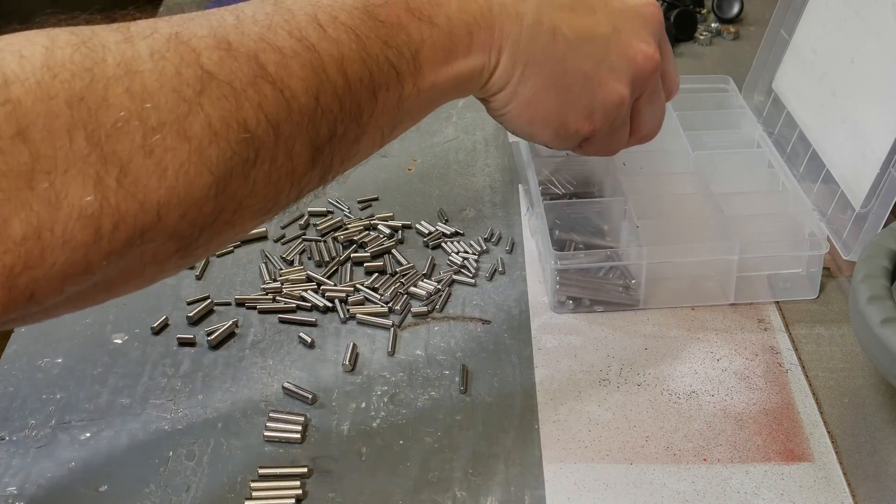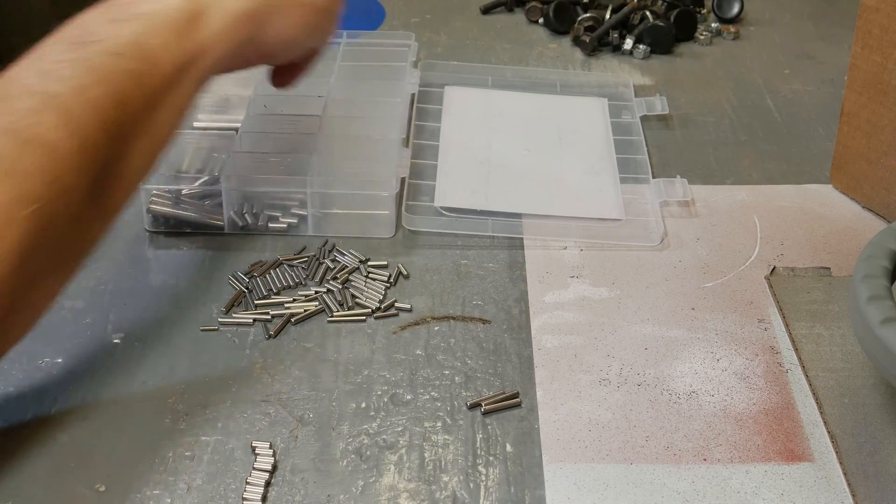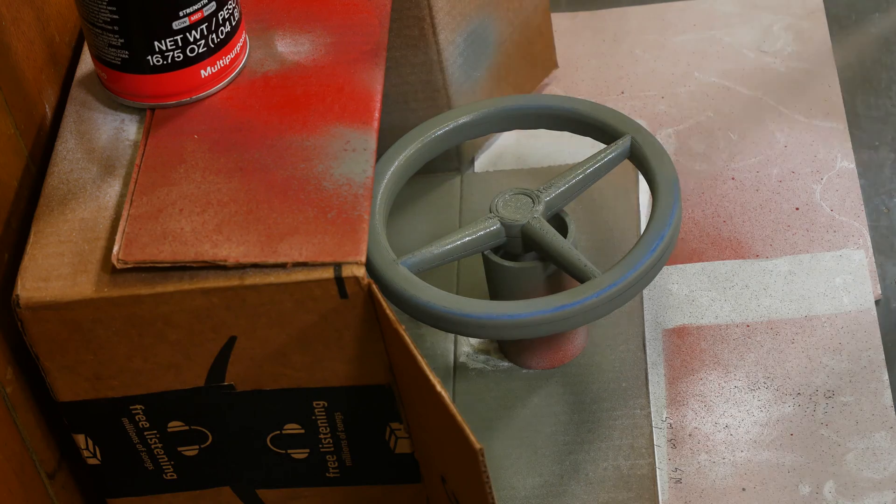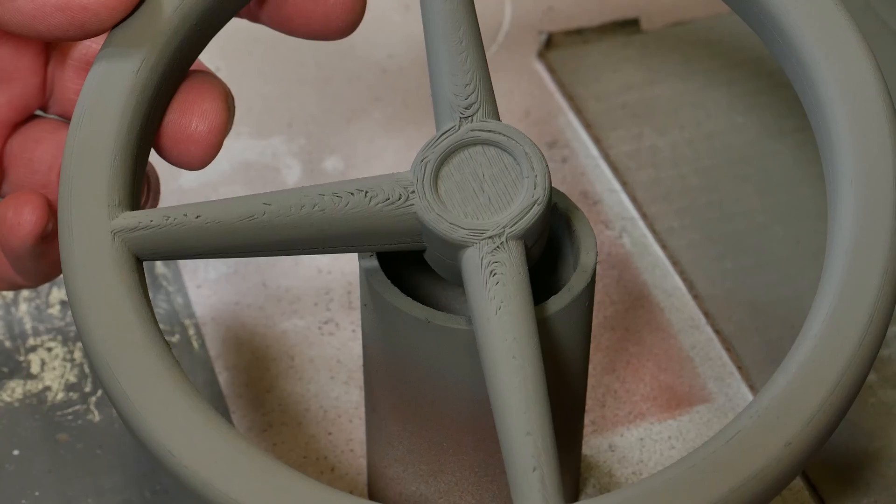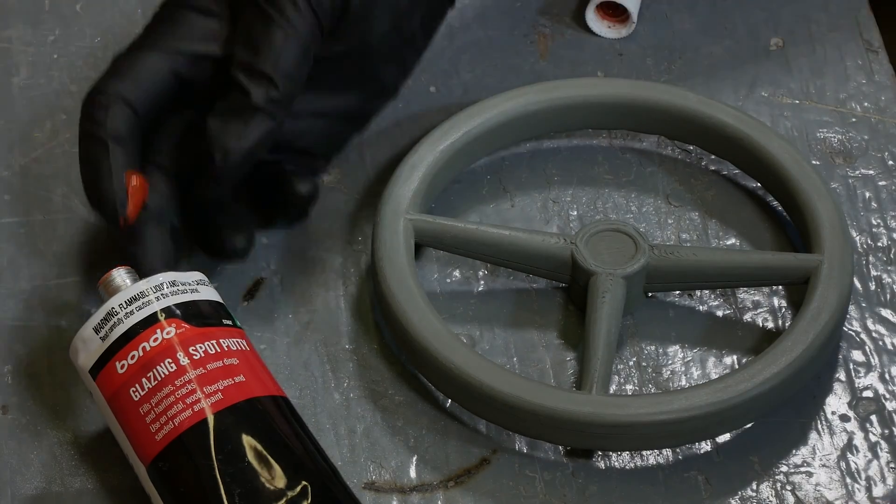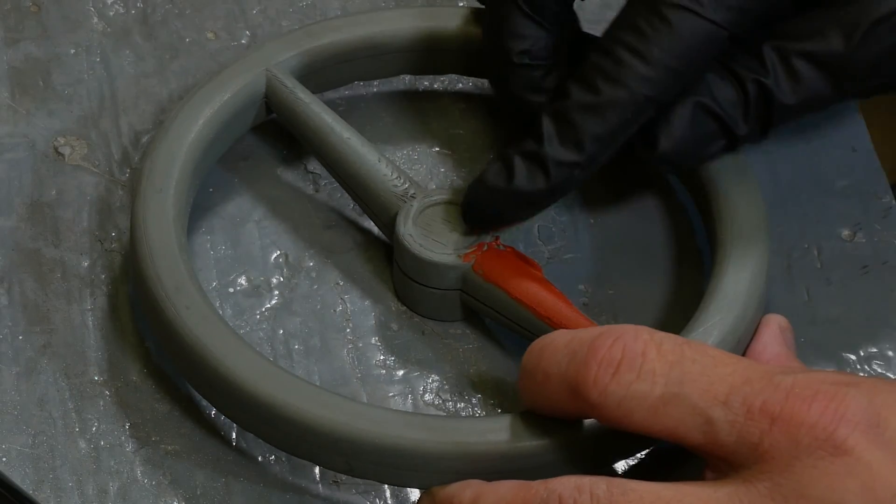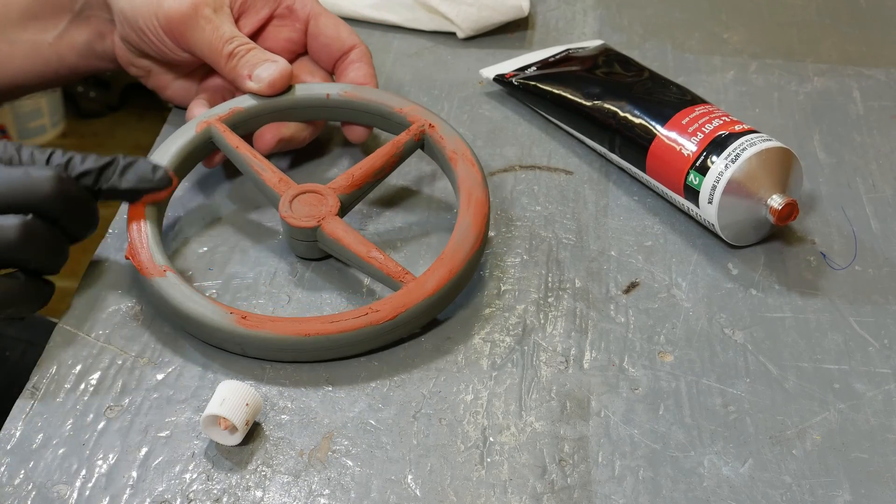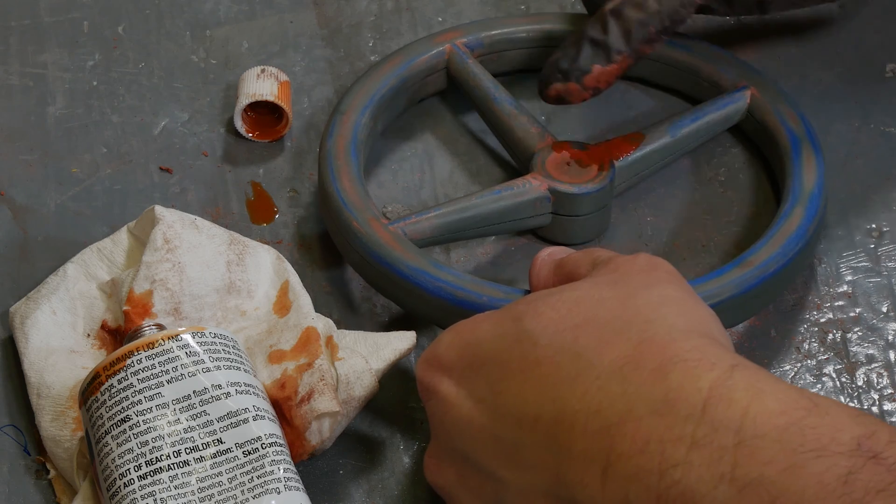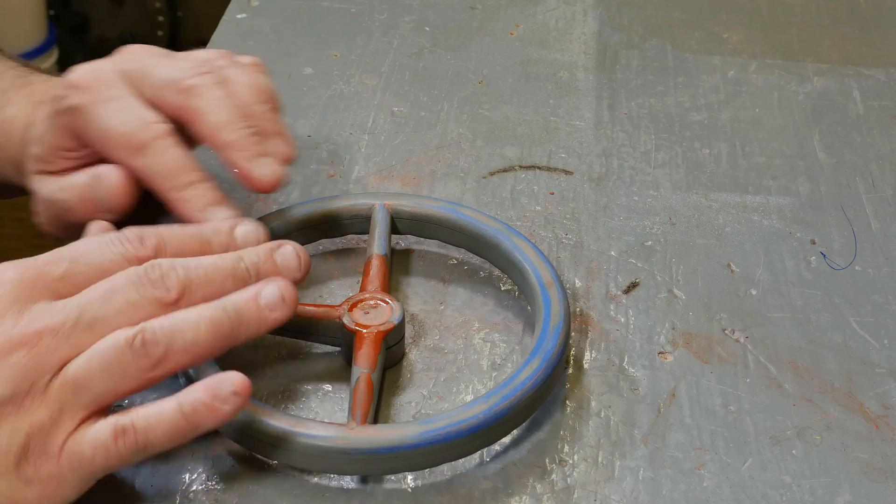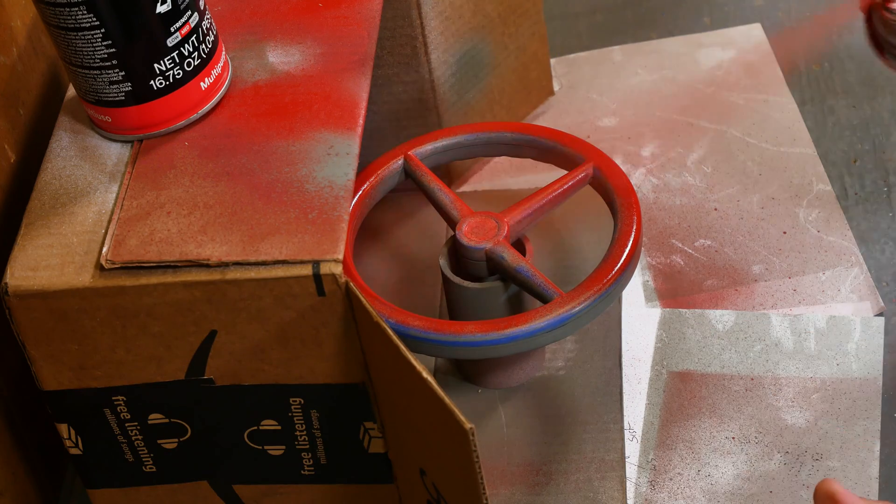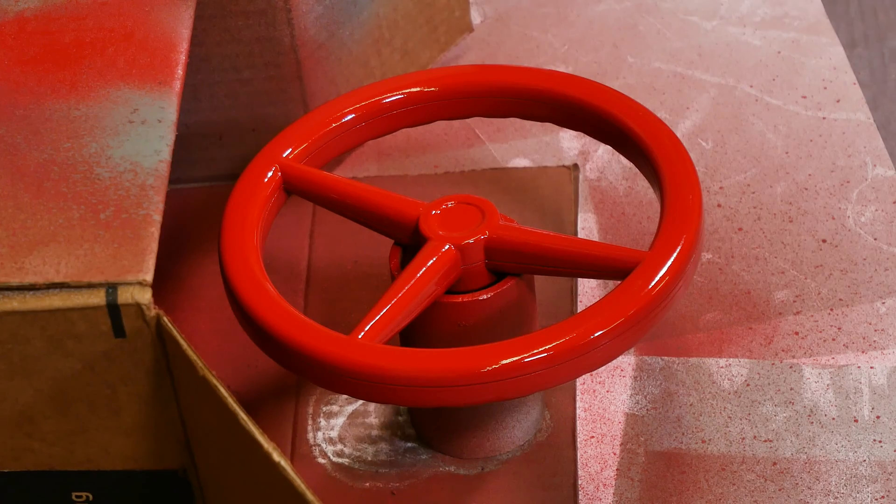While that first side is drying, I'll sort out these dowel pins. This top surface here is what's going to need the most filling. It's where you can really see the layer lines. This is how we're looking after filling and sanding. Looks like we are ready for paint. Let that dry, turn it over, do the other side.